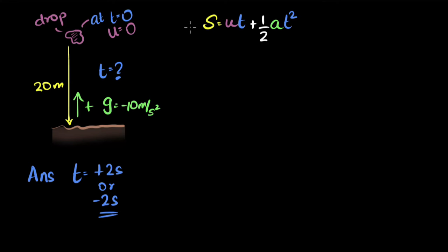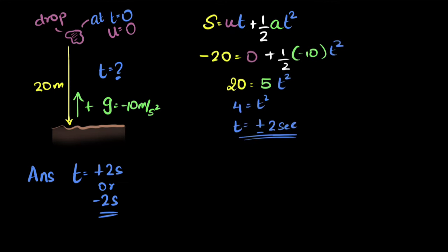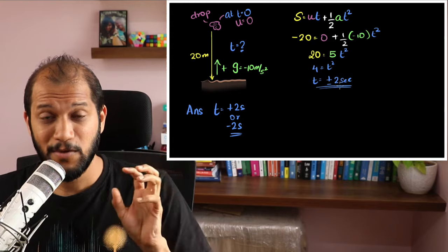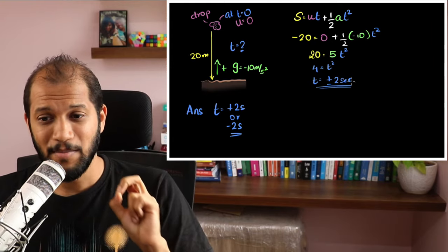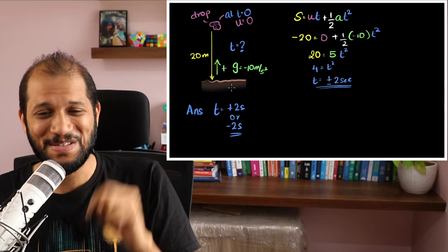Now we can substitute. Displacement will also be negative 20 meters, because upwards is positive and here the displacement is downward. We can plug everything in and we'll get the same result: T equals plus or minus two seconds. But coming back to the question — why are we getting minus two seconds? Why is the equation telling us two seconds ago the stone was on the ground?